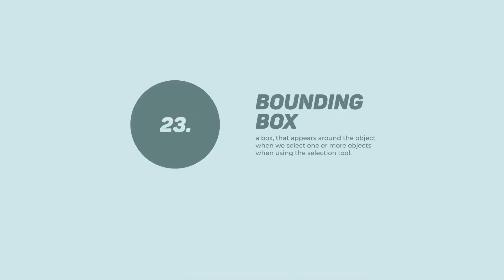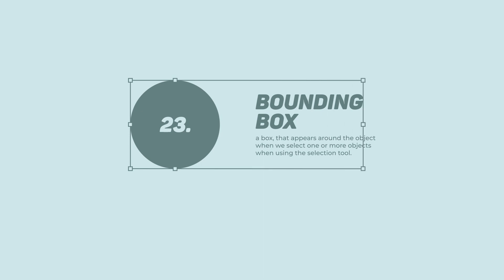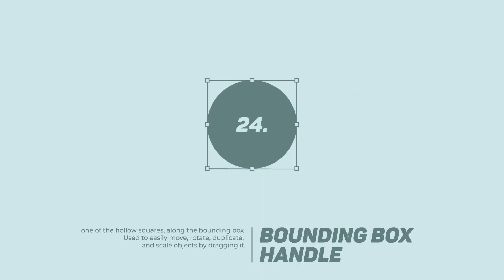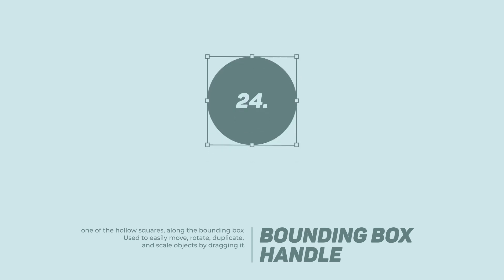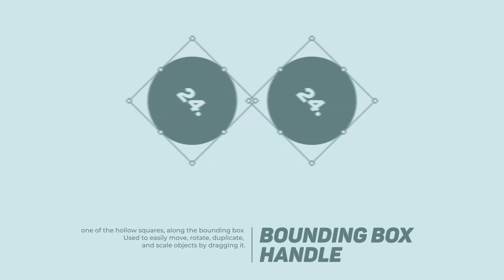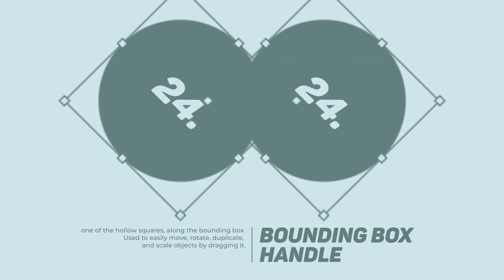Bounding Box — a box that appears around the object when we select one or more objects using the Selection Tool. Bounding Box Handle — one of the hollow squares along the bounding box used to easily move, rotate, duplicate, and scale objects by dragging it.